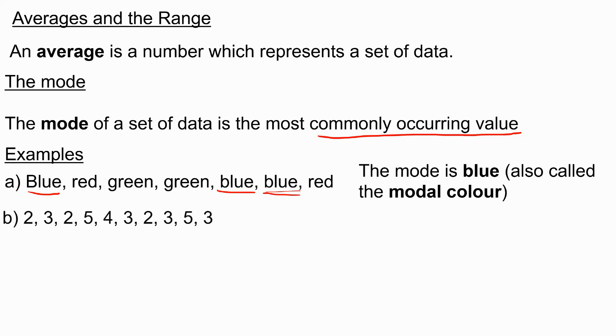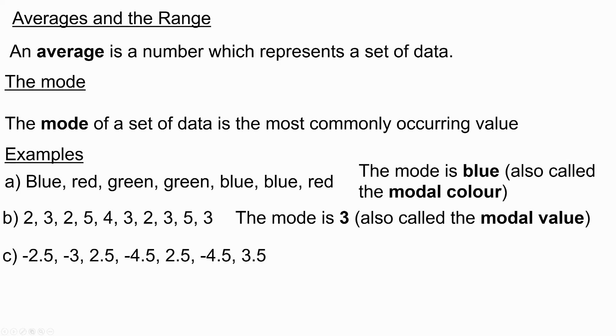In this list of numbers, which we'll more commonly see, the mode is three, the modal value, because three comes up more than any of the other numbers. In this list of numbers, we have negatives, it doesn't matter. The mode is minus 4.5.